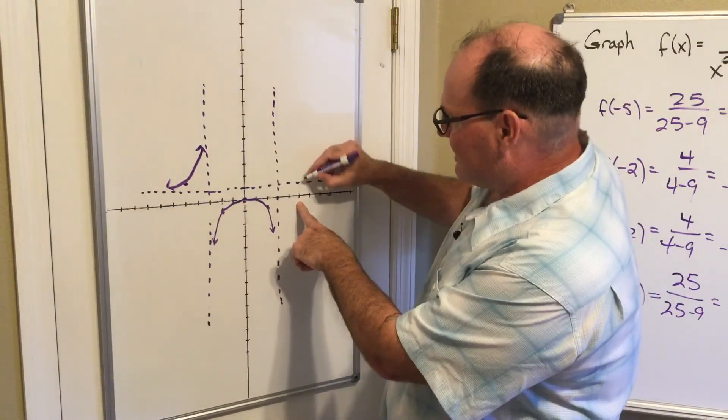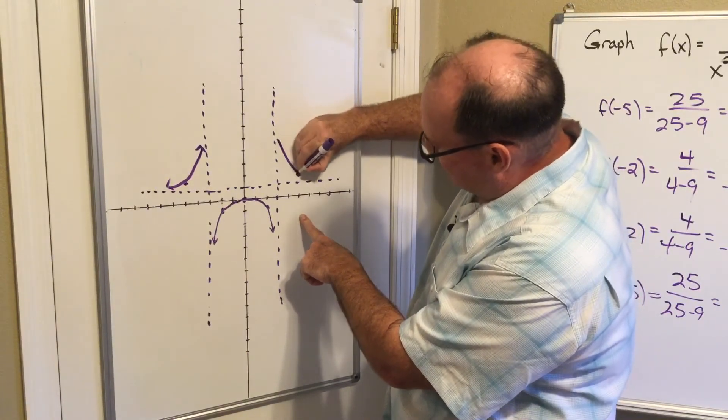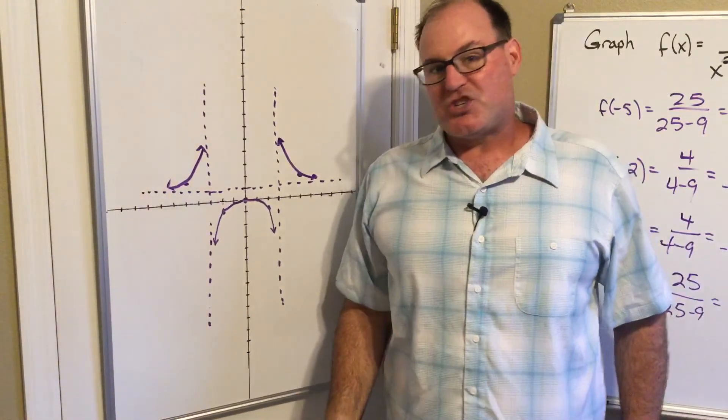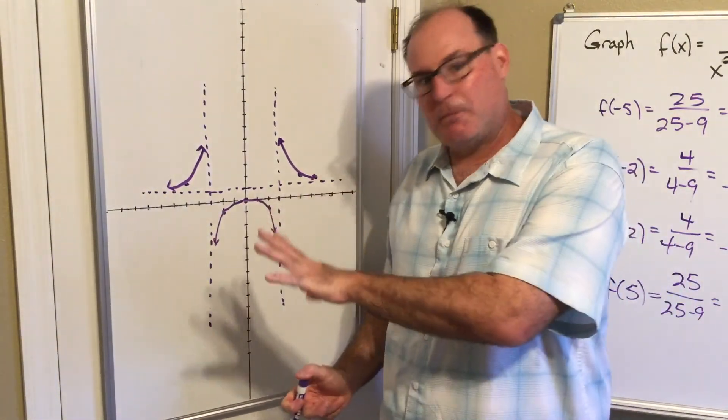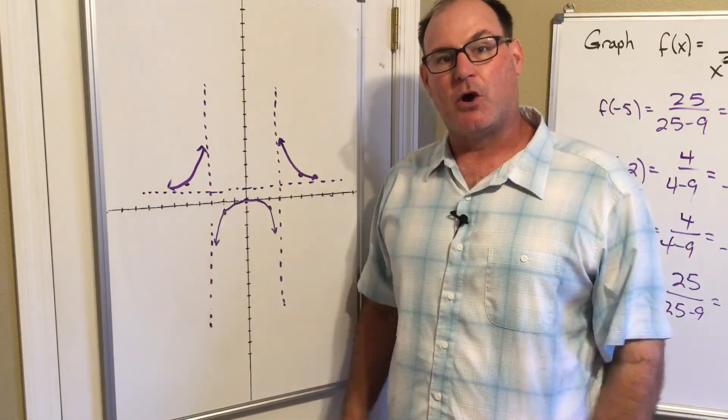And then last but not least, at the value five I got 25 over 16, so one and some change. And here is my graph right here. Again, we're just getting a sketch - this is not super precise, but we get a feel for the general shape of this rational function. Good luck with your homework.